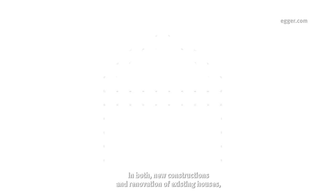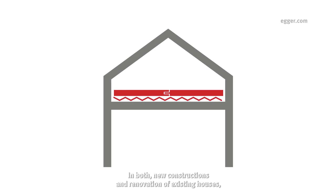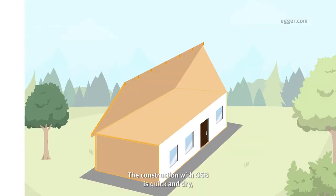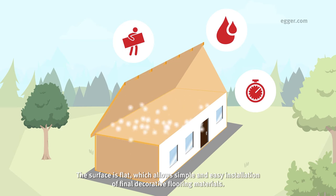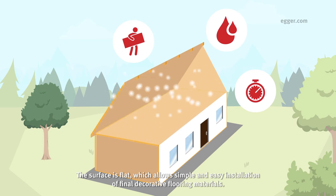In both new constructions and renovation of existing houses, the use of OSB in subfloors and dry screeds is time and cost efficient. The construction with OSB is quick and dry, and further construction steps can be immediately initiated. The surface is flat, which allows simple and easy installation of final decorative flooring materials.